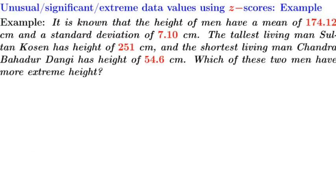It is known that the height of men have a mean of 174.12 centimeters and a standard deviation of 7.10 centimeters. The tallest living man, Sultan Kosen, has height of 251 centimeters, and the shortest living man, Chandra Bahadur Dangi, has height of 54.6 centimeters. Which of these two men have more extreme height?